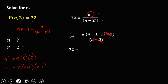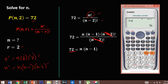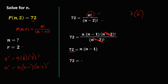So 72 is equal to n times n minus 1. This product n times n minus 1 is the product of 2 consecutive numbers. We need to find these 2 consecutive numbers whose product is 72. Testing: 7 times 8 is 56, and 8 times 9 is 72. So 72 equals 9 times 8, writing the bigger number first. Therefore, n is equal to 9.